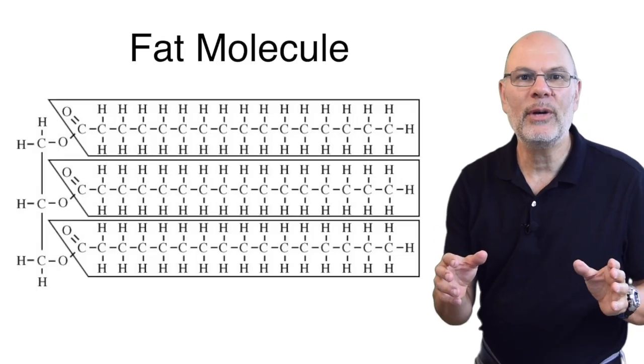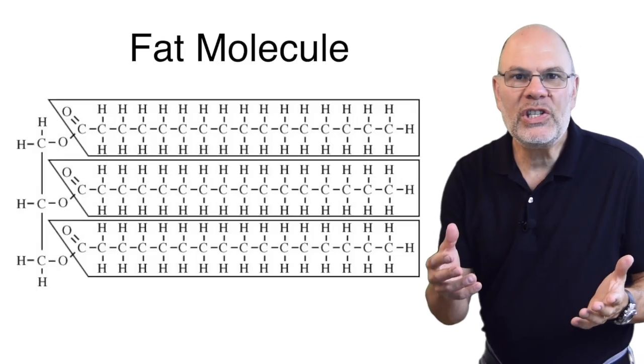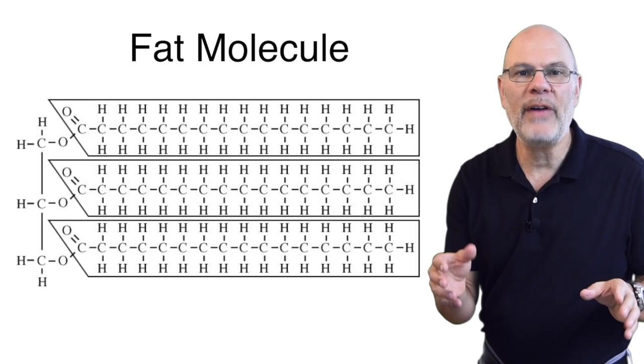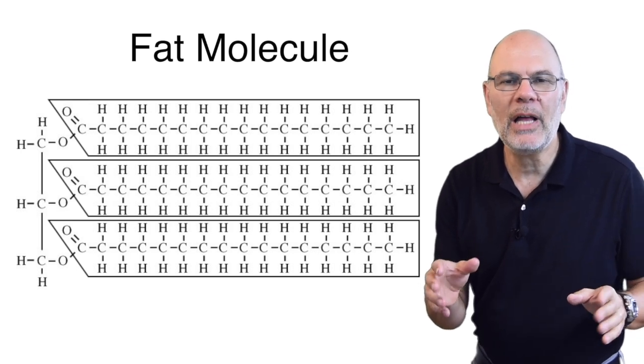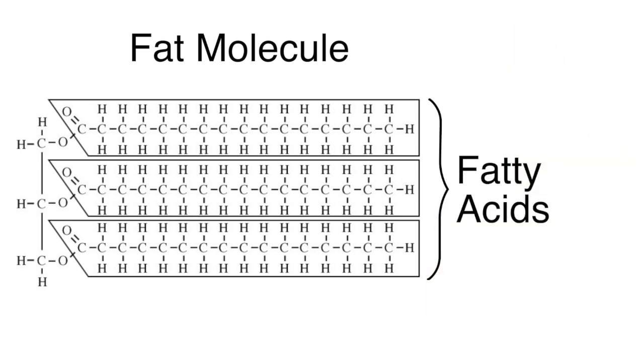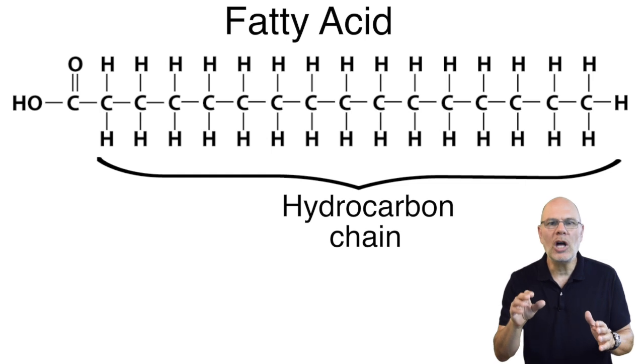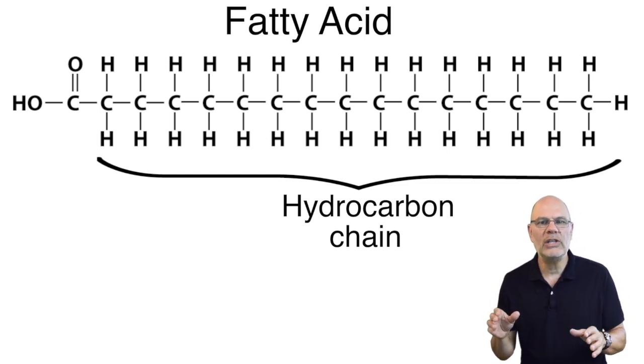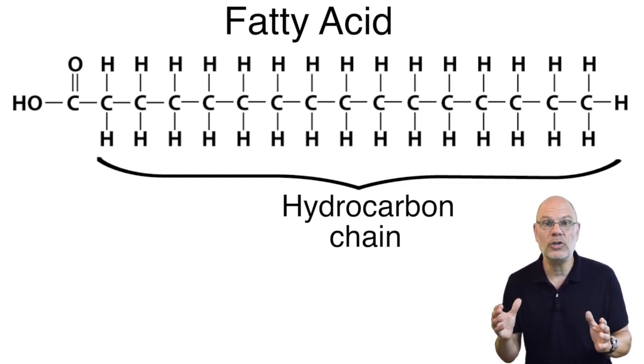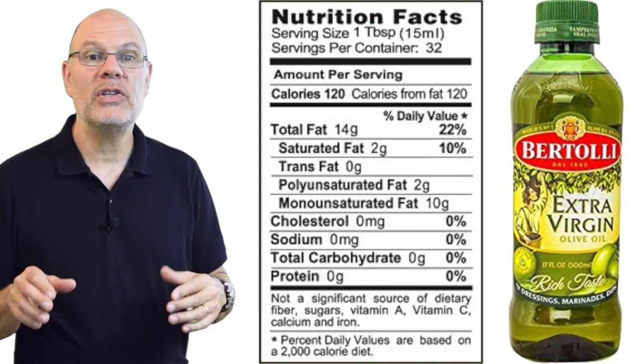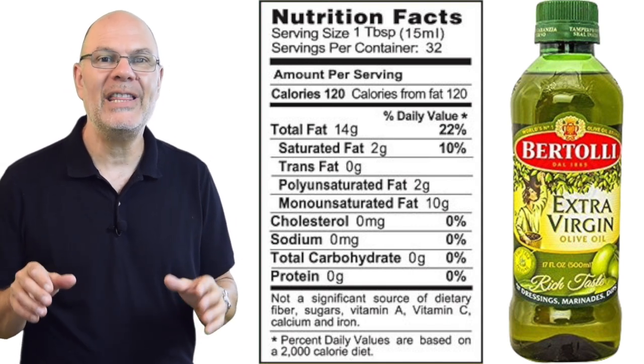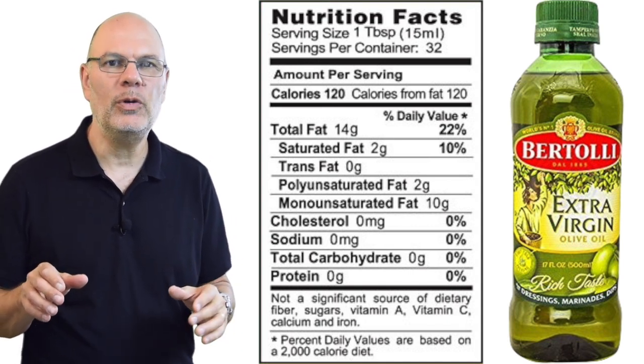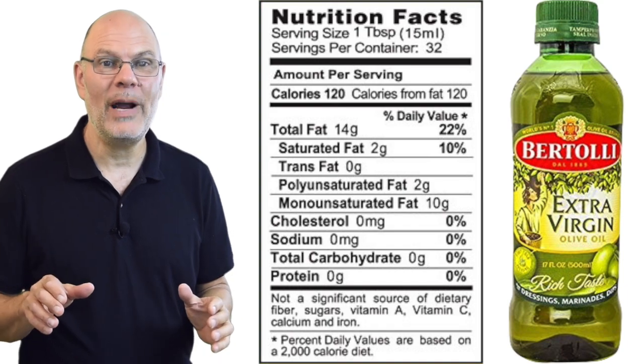Fats and oils are chemically very similar. You can see in the structural formula of a fat that one of their main building blocks is what's called a fatty acid. Fatty acids have a long hydrocarbon chain, and those hydrocarbon chains are loaded with chemical energy. That's why fats and oils have more food energy than any other type of food, 9 calories per gram.